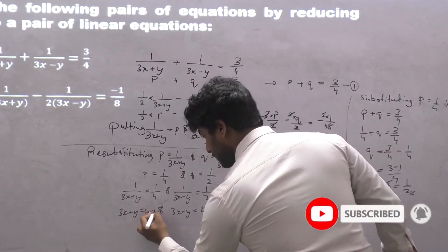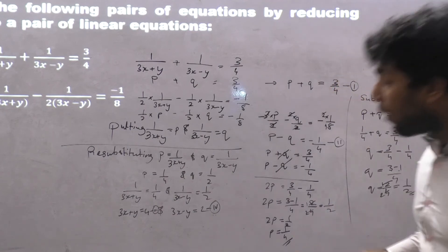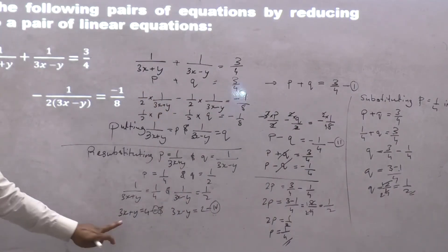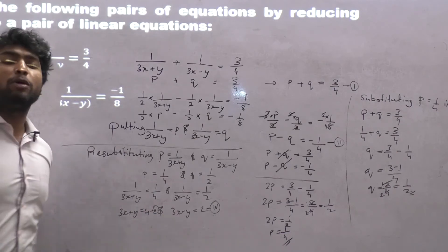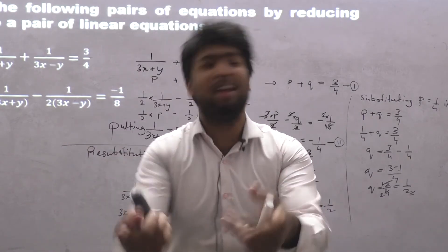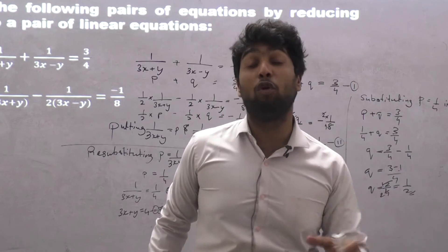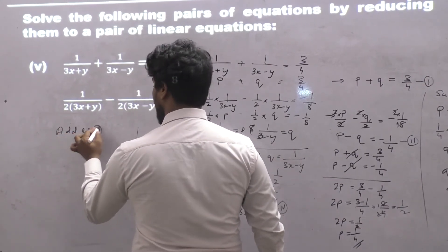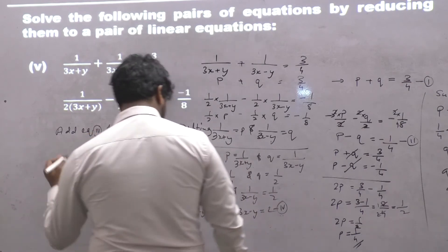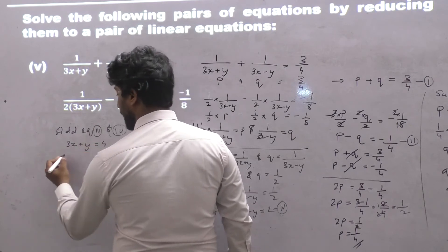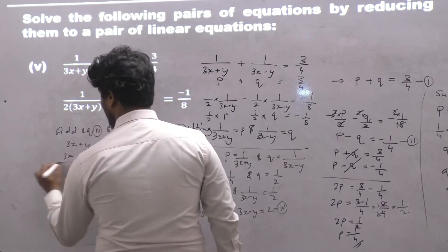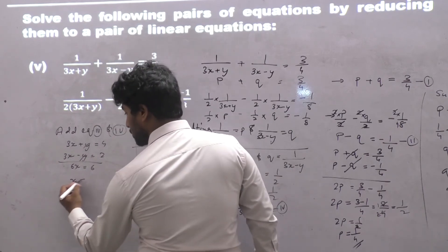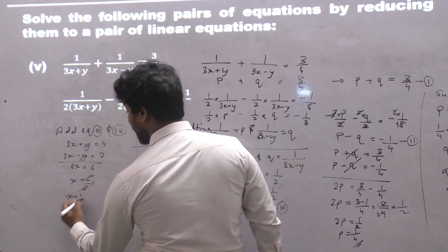Marking these as equation 3 and equation 4. To find the values of x and y, I will add equation 3 and equation 4. Adding: 3x + y equals 4 and 3x − y equals 2. On adding, y and −y cancel, giving 6x equals 6, so x equals 6 upon 6, which is x equals 1.